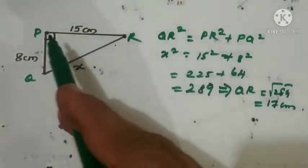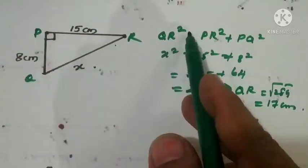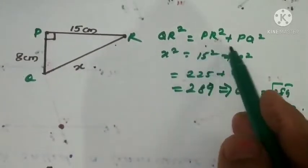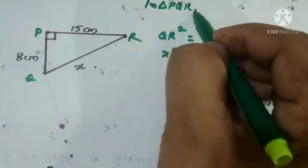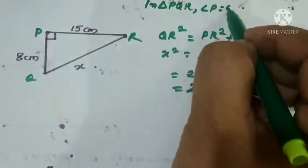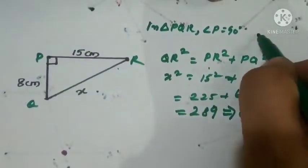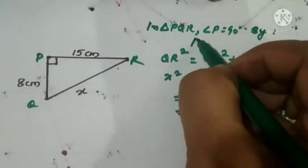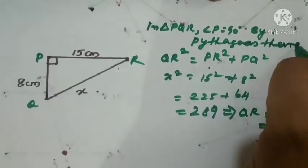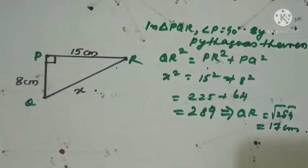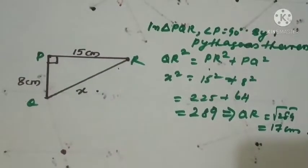Therefore QR equals root of 289, which equals 17 centimeters. Writing the solution formally: in triangle PQR, angle P equals 90 degrees, therefore by Pythagoras theorem, QR square equals PR square plus PQ square. So x square equals 15 square plus 8 square equals 289, therefore x equals root of 289, which equals 17 centimeters.